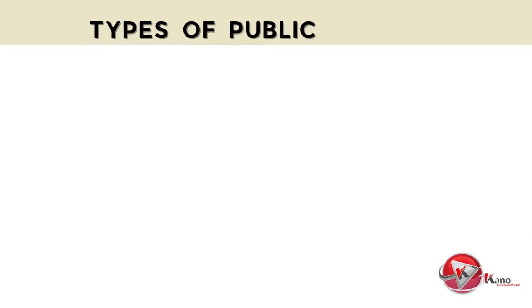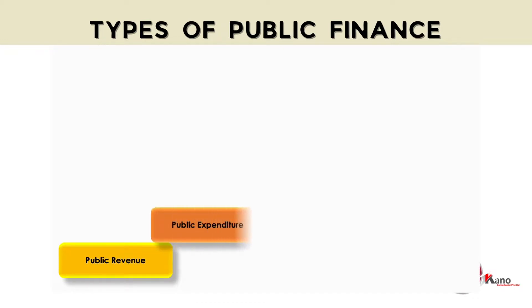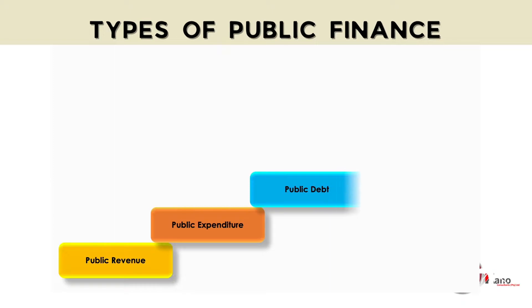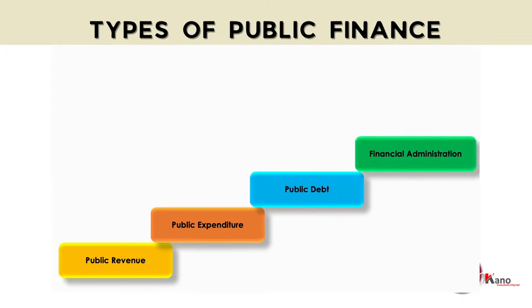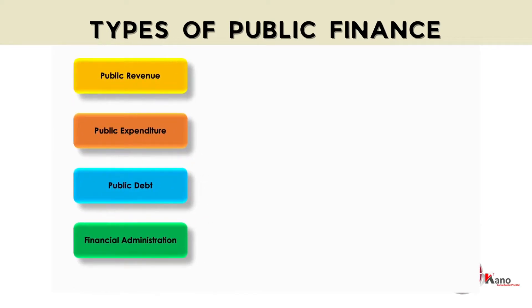As indicated, there are generally four types of public finance which work together to achieve a common goal, and these are: public revenue, public expenditure, public debt, and financial administration. Let's now briefly discuss each of these.